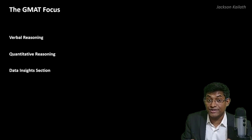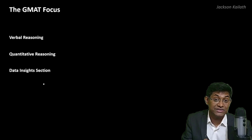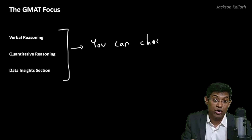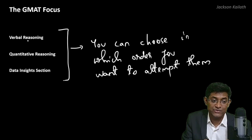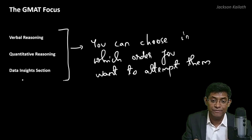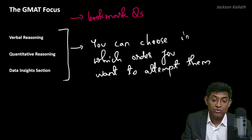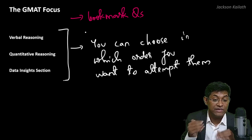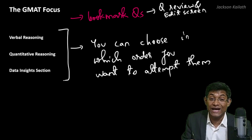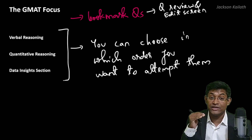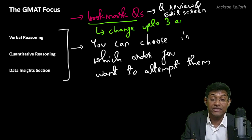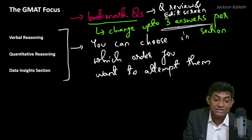There are three sections on the GMAT Focus — verbal reasoning, quantitative reasoning, and data insights — and on the test you can attempt these sections in any order you choose. You could go verbal first, then quantitative, then data insights, or any other order. The GMAT Focus also allows you to bookmark as many questions as you want, but you have to solve the question and move forward. Once you're done with a section, if you have time left, you'll see a question review and edit screen where you can review bookmarked questions and change your response for up to three answers per section.